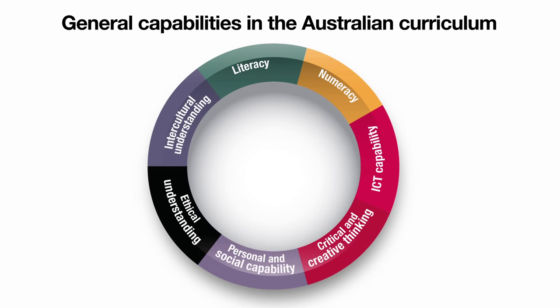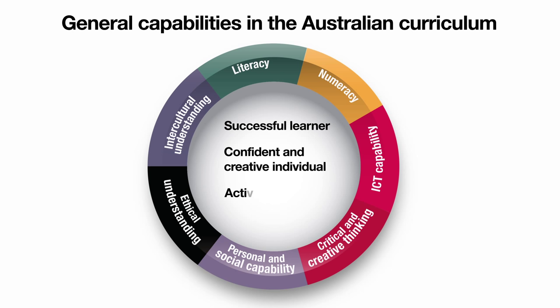In addition to learning area content, the Australian Curriculum pays particular attention to a set of seven general capabilities. These capabilities encompass knowledge, skills and behaviours that will equip young Australians to live and work successfully in the 21st century.